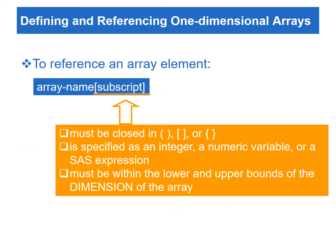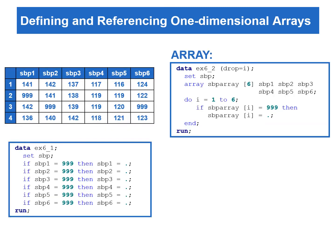After an array is defined, we can reference an array element in the data step. The subscript component is used to specify the subscript of the array, and the subscript must be within the lower and upper bounds of the dimension of the array. Now we can rewrite our program by using array processing. Notice that the variables SBP1 to SBP6 are listed in the array statement. The if-then statement is enclosed in the iterative do loop. The loop iterates from 1 to 6, and the variable i serves as the index variable. During each iteration of the do loop, the array reference SBP_array{i} refers to each array element.